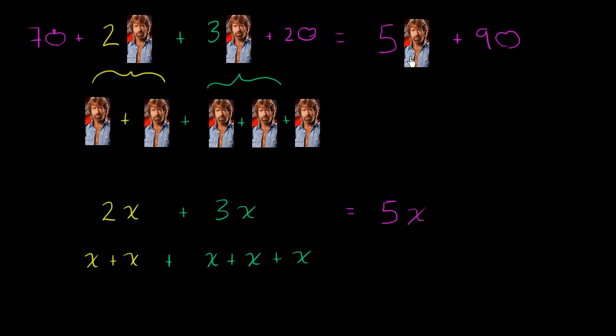So this simplifies to five Chuck Norrises and nine plums. Similarly, over here, if I had, instead of just two x plus three x, if I had seven y plus two x plus three x plus two y, what do I now have?